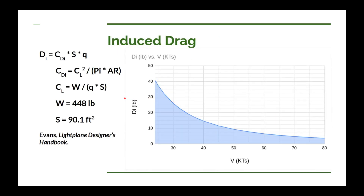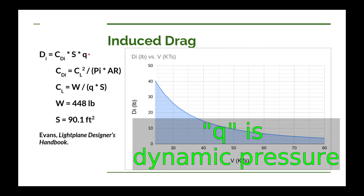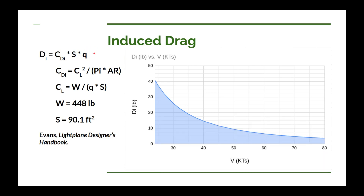Induced drag is pretty easy to calculate. It equals the coefficient of induced drag multiplied by the surface area of the wing, then multiplied by Q. Your horizontal tail is also going to have some induced drag because it's producing lift — in the downward direction — but generally it's pretty insignificant compared to the induced drag of the main wing, so we're going to ignore that.